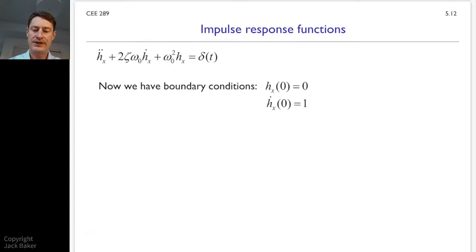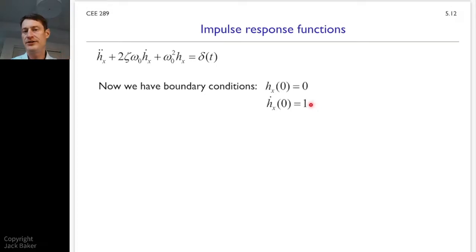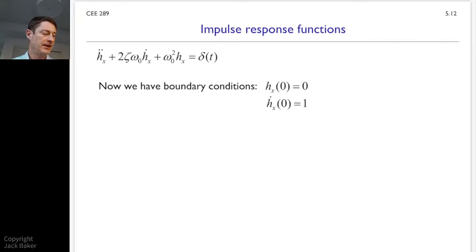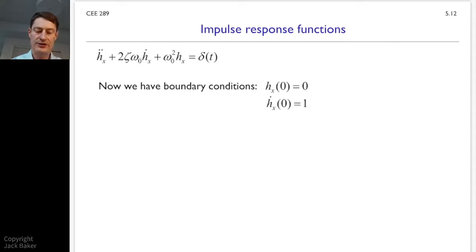To summarize what we've got: we have the standard form of the differential equation with the impulse response function and its derivatives, and the Dirac delta for excitation. Our boundary conditions are: velocity equals one right at zero-plus, and displacement equals zero because there's no time to respond with a finite velocity. This specifies how h(t) and its derivative behave at time zero.